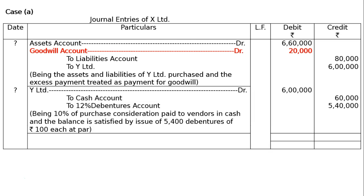Then Y Ltd. debited Rs. 6,00,000; to cash account — 10% of Rs. 6,00,000, that is Rs. 60,000; to 12% debentures account — that is Rs. 5,40,000. Being 10% of purchase consideration paid to vendors in cash, and the balance satisfied by issue of 5,400 debentures of Rs. 100 each at par. The total of both debit and credit columns will be Rs. 12,80,000.